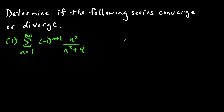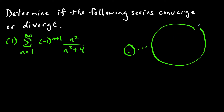Now let's look at a few examples where we try to show if the series converges or diverges. For this first example, the first thing that jumps out at me is that we have an alternating series because we have a negative one to the n plus one attached.